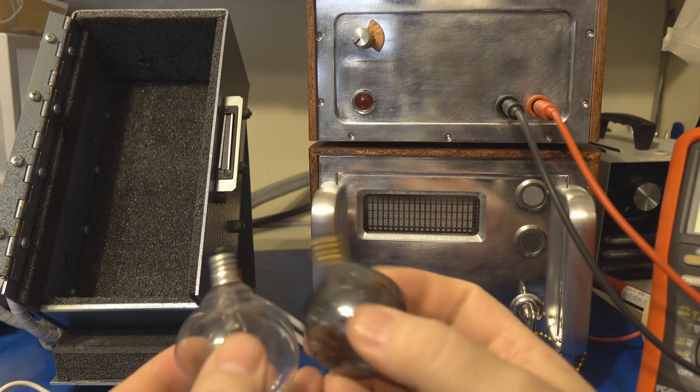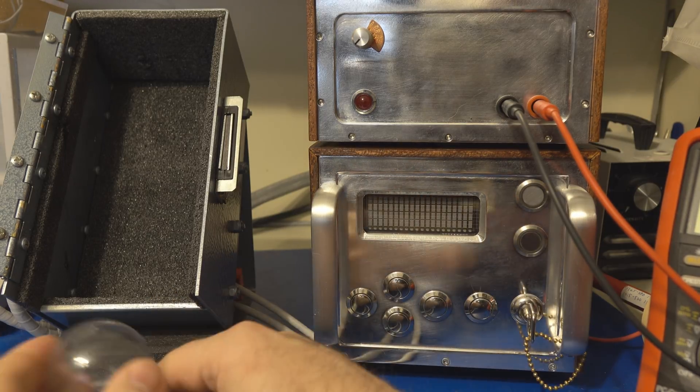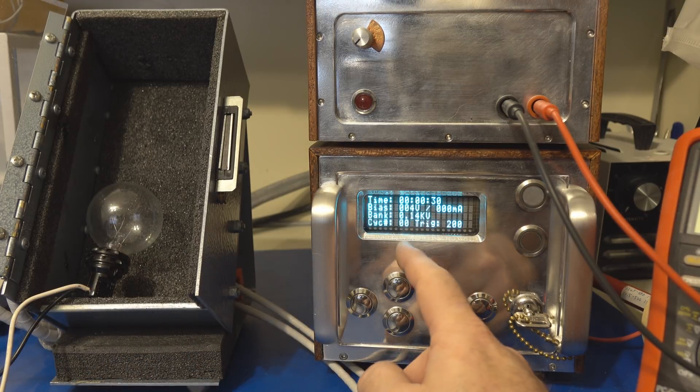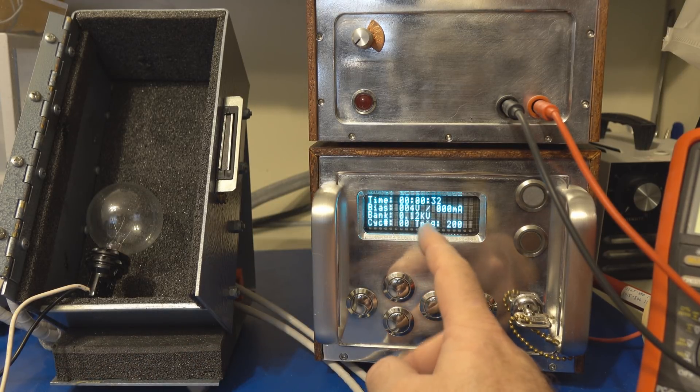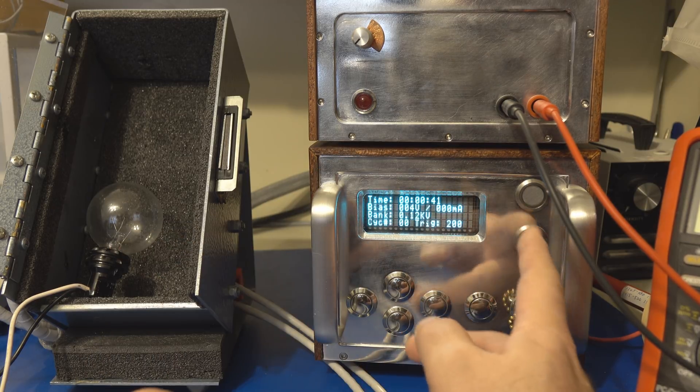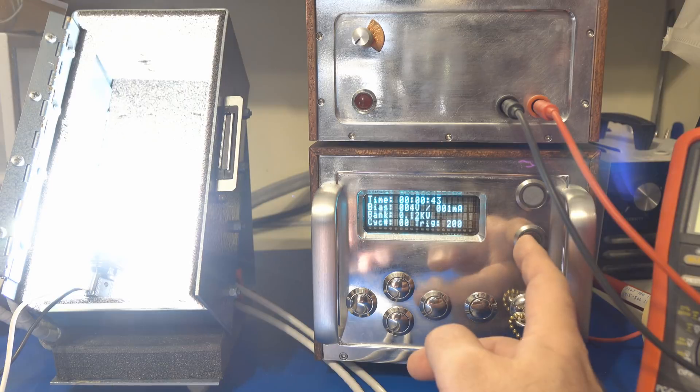They're both rated for 120 volts. Let's just go ahead and turn on our generator. Again, this transient generator has a transformer inside of it along with a full wave bridge, and then it can supply that signal to our test load.